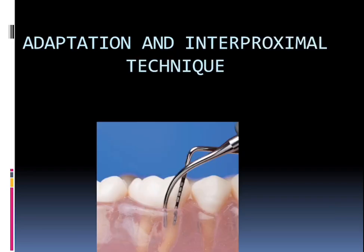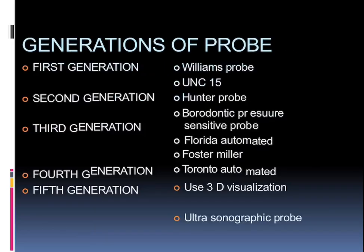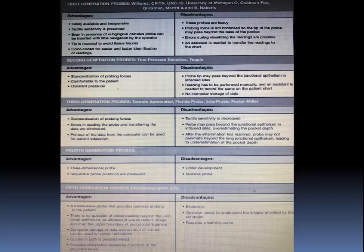Talking about adaptation and interproximal technique: the probe should be adapted along the long axis of the teeth, whereas in the case of defects or interproximal areas we can keep the probe slightly angulated. Talking about the generations of probes, there are five generations — we will cover them in the next picture.